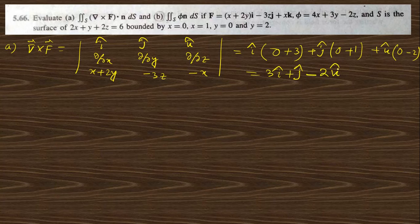Correcting the k̂ component: ∂/∂x of (−x) gives −1 and ∂/∂y gives 2, so the k̂ term is (2 − (−1)) ... there is an error here, so with correction this becomes −1 for that component. So curl F = 3î + ĵ − 2k̂ (with the corrected sign noted).